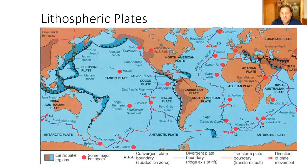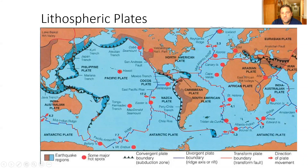There are different movements that take place at these boundaries. Looking at the map, convergent plates are shown in black with triangles, found all along the Pacific Ocean. Divergent plates are shown in blue, with red highlights as examples. Transform plate boundaries are shown in red and are typically found in between divergent plate boundaries. Today we're taking a look at each of those individually.